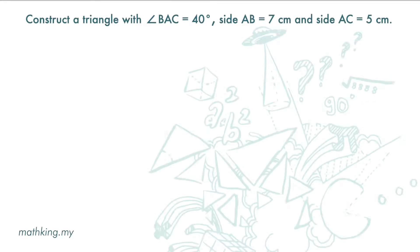Construct a triangle with angle BAC equal 40 degrees, and side AB equal 7 cm, and side AC equal 5 cm. Now, let's draw a line segment here. Mark this point as B. And construct a 40 degrees angle. AB is 7 cm. AC is 5 cm. And we get a triangle.